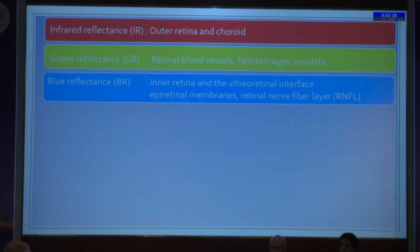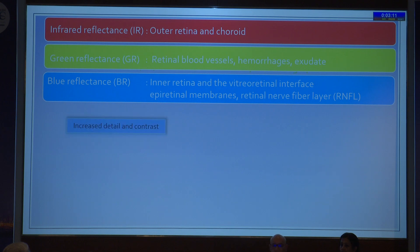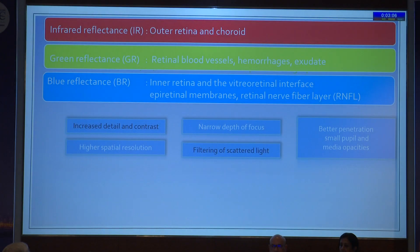Since the lasers penetrate tissue to different depths and highlight different structures, the infrared reflectance tells us about the outer retina and choroid, the green reflectance about retinal blood vessels and hemorrhages, and the blue reflectance tells us about the inner retina. Because it is based on confocal optics, it gives better contrast, higher resolution, narrow depth of focus, better filtration and better penetration. Because of these advantages, it has been evaluated in a number of retinal pathologies.